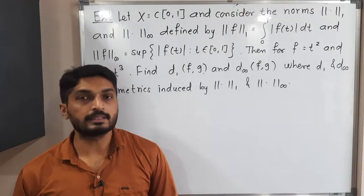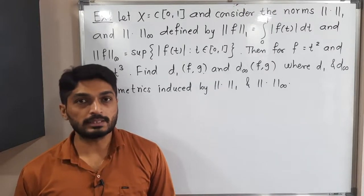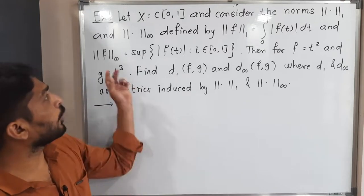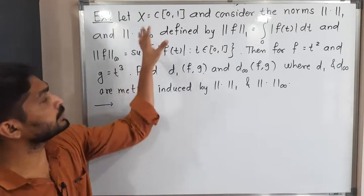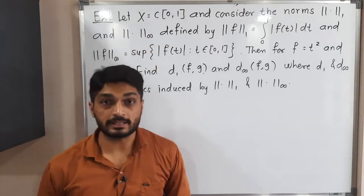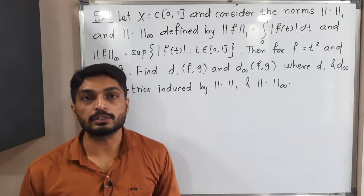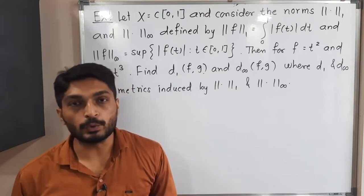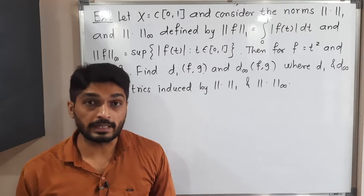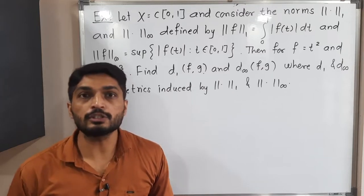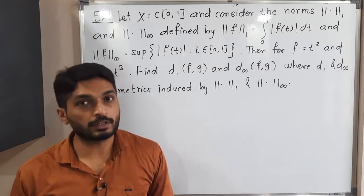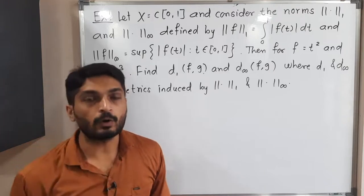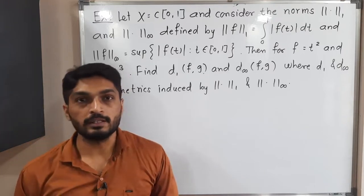Let us discuss this example. They have given two norms: norm one and norm infinity, which are defined on X, which is nothing but C of the closed interval [0,1]. As mentioned in previous videos, C[0,1] indicates the set of all continuous functions defined on the closed interval [0,1]. So we have a continuous function defined on the closed interval [0,1].